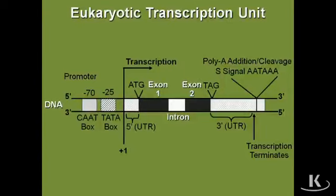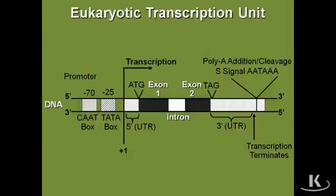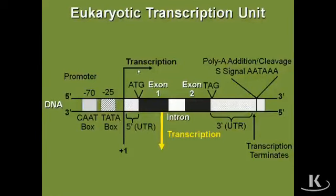The next thing we'll look at is the eukaryotic transcription unit, and we want to compare this with what we just saw with prokaryotes. Very similar setup, once again with some subtle differences. We have a promoter region — once again, the promoter region is the area where the RNA polymerase comes along, looks for a spot to bind, and when it does, it'll initiate transcription at the plus one site. That's where transcription initiation occurs. Once transcription happens, you end up with an RNA copy of the DNA that was there.